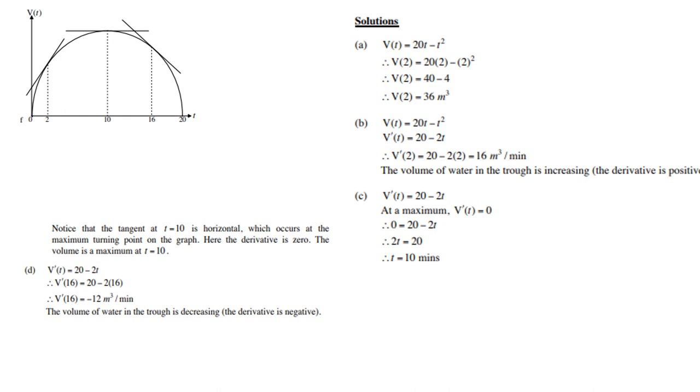And then, C. Again, derivative, which is 20 minus 2t at maximum. So, you let the derivative be 0 for a maximum. Then, solve for t, and you get it at 10 minutes. Notice that the tangent at t equals 10 is horizontal, which occurs at the maximum turning point on the graph. Here, the derivative is 0. The volume is a maximum at t equals 10.